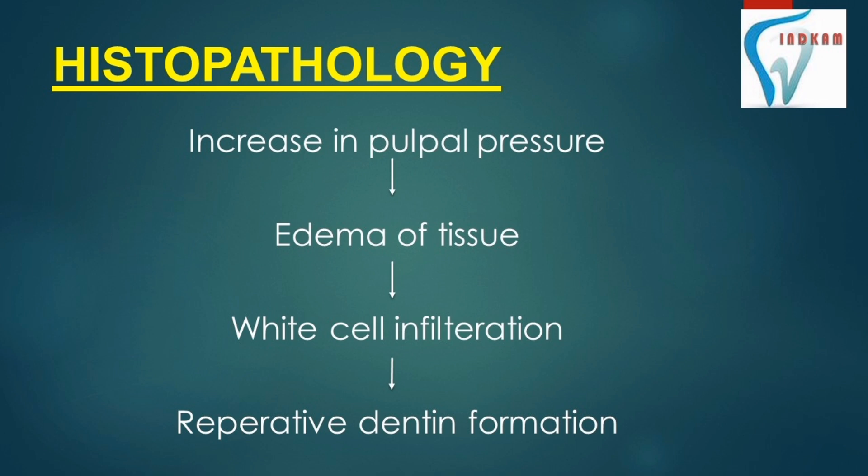Regarding histopathology, an increase in pulpal pressure occurs which causes anemia of tissue. White cell infiltration occurs, and then reparative dentine formation is present.